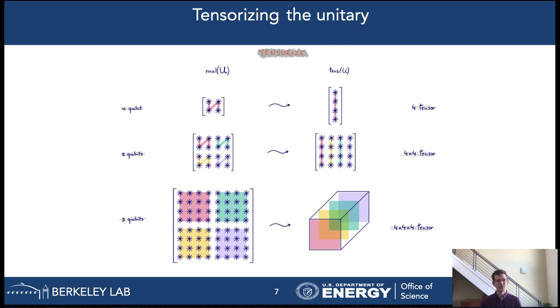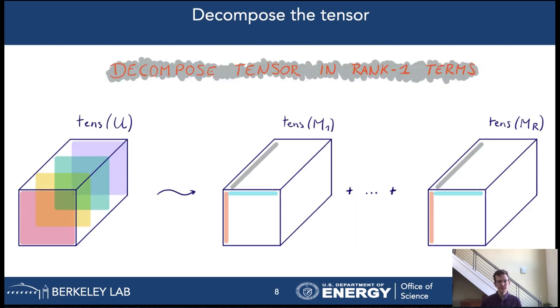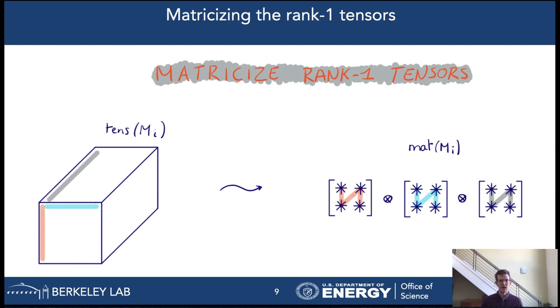I'll continue explaining the rest of the method for the 3-qubit example or the third-order tensor. After we have reshuffled our unitary matrix to a tensor representation, we can compute a tensor-rank decomposition from this tensor using existing methods. This approximates the 3D array as a sum of rank 1 tensors. The following step in the process is then to go from a tensor representation of a rank 1 tensor back to a matrix representation. We call this step in the process matrixizing the tensor and we see that the result of matrixizing a third-order rank 1 tensor is a Kronecker product of 3 2x2 matrices. Again, this step is just a simple re-indexing of the elements of the tensor and doesn't require any actual computations.